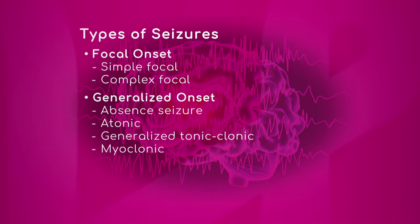Generalized tonic-clonic seizures are what most people think of when they think of seizures — they're very dramatic and very scary to observe, involving generalized tonic or ballistic limb movements that you can't miss. A myoclonic seizure is a form of generalized seizure that causes myoclonus, which is erratic, generalized limb movement.